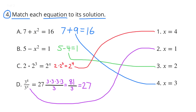Part c: 2 times 2 to the third power equals 2 to the x power. Looking at solution 1 where x equals 4, substituting gives 2 times 2 to the third power equals 2 to the fourth power. That's 2 times 2 times 2 times 2 equals 2 to the fourth power. Solution 1 matches equation c.